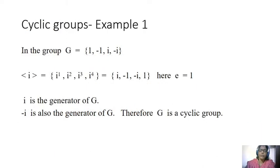I want to give you an example. Here I am taking a group with elements 1, -1, i, -i. Here i is the generator. i power 1 gives you i. i power 2 gives you -1. i power 3 gives you -i. i power 4 gives you 1. Here 1 is the identity element of this group. So i is the generator of G.